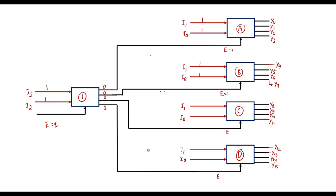So this is how, with 4 inputs I3, I2, I1, and I0, and outputs Y0 to Y15 giving 16 outputs, we have implemented a 4-to-16 decoder using only 2-to-4 decoders — specifically 5 of them.